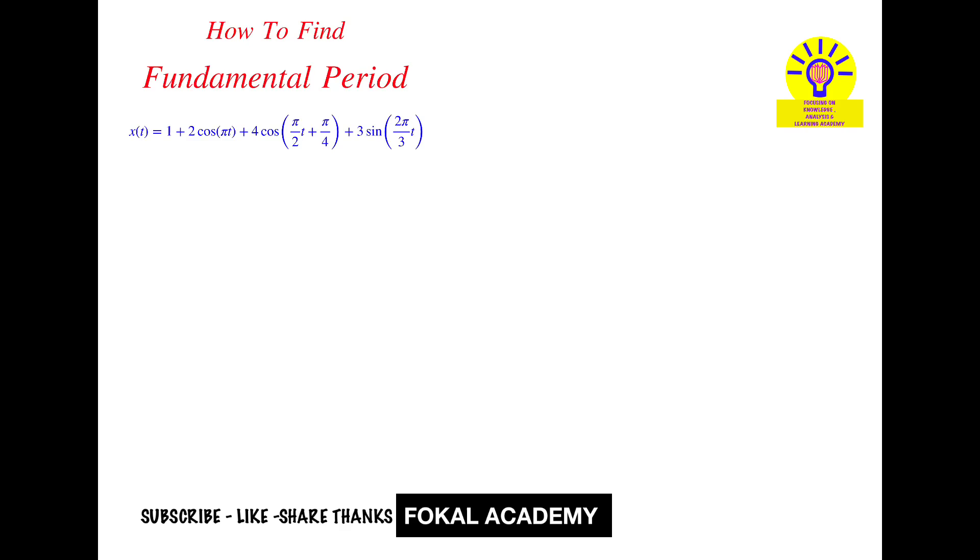So you have totally four signals. This is DC signal and these are the periodic functions. So for DC signal, frequency is 0, so no need to consider. Now for these three periodic functions, they have a frequency. So find it.